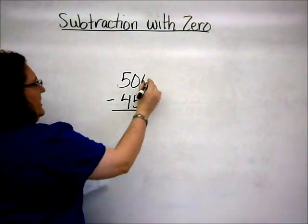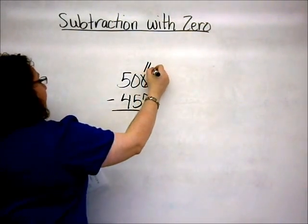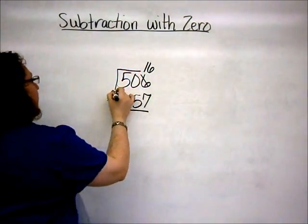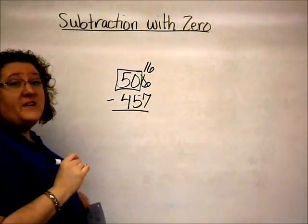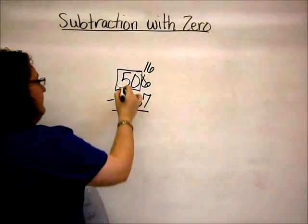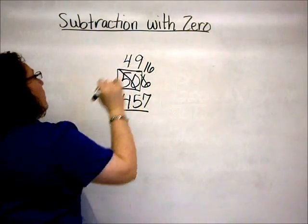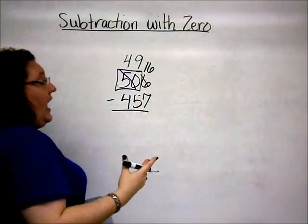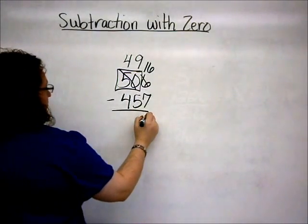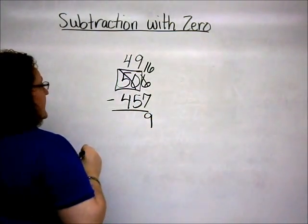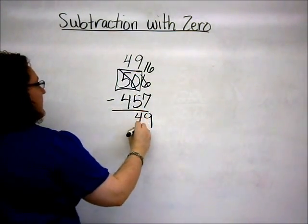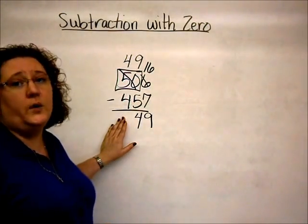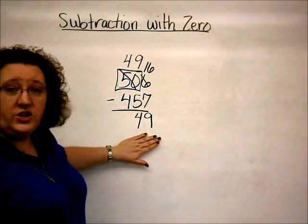But, I can use the box method, because I cannot subtract here. And I know that adding ten will give me sixteen here. I get that by regrouping. I take the fifty, using the box method, and change it to a forty-nine. I borrow one, which regroups into ten ones. Then, from there, I can subtract the rest of the problem. Sixteen minus seven is nine. Nine minus five is four. Four minus four is zero. Which, of course, we don't write the zero in the front. We leave it as a two-digit number forty-nine.